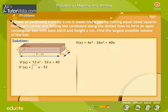We now take the second derivative. We get V2 dash x is equal to 24x minus 52.